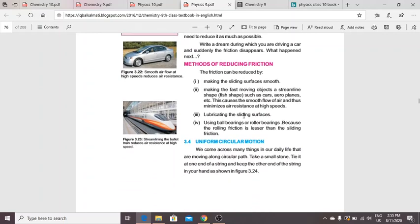Methods of reducing friction: First, making the sliding surfaces smooth. Second, making fast moving objects a streamlined shape, such as cars and aeroplanes. This causes a smooth flow of air and thus minimizes air resistance at high speed.